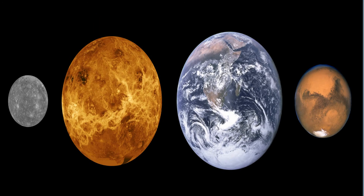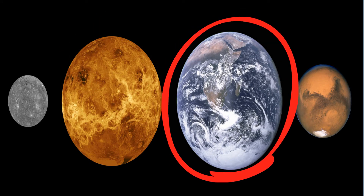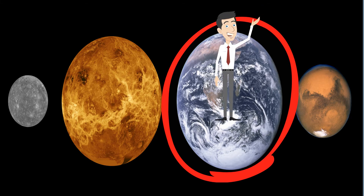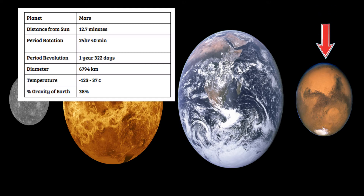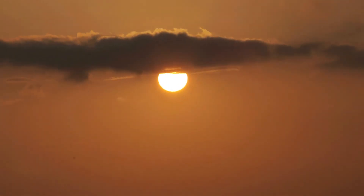Earth is the third planet from the sun, and as of right now, it is the only object in the universe to harbor life. Mars is the fourth planet from the sun, and the second smallest planet in the solar system after Mercury. Its tilt on its axis causes seasons, and it has two moons. Its atmosphere is made up of carbon dioxide, argon, and nitrogen.